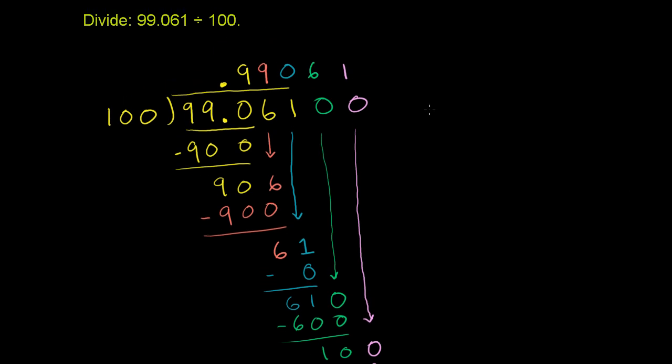So our final answer is 99.061 divided by 100 is equal to 0.99061. And I just put a leading 0 here. Just sometimes it makes it easier to read, and you make sure people understand that there's a decimal there. It just makes it less prone to errors. And we are done.